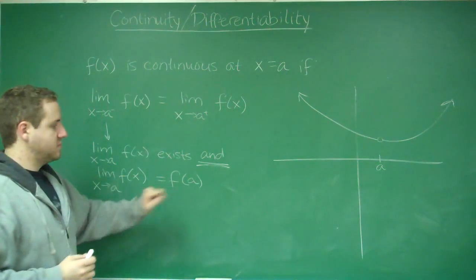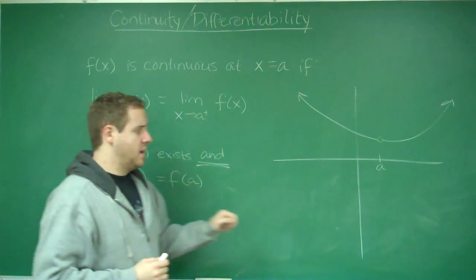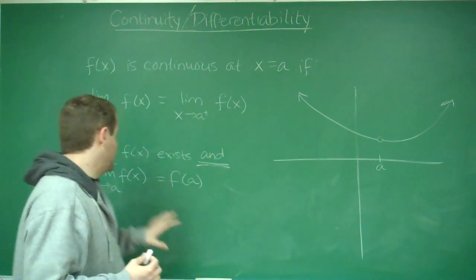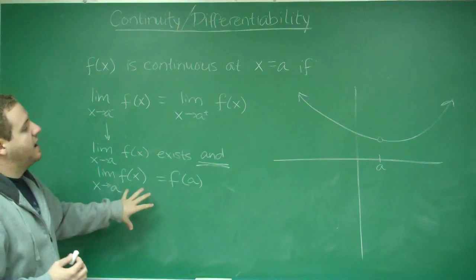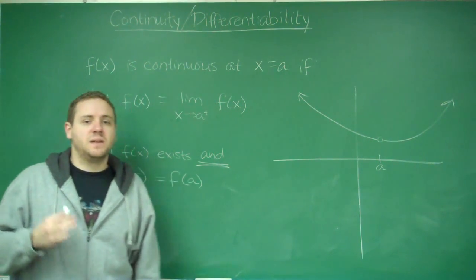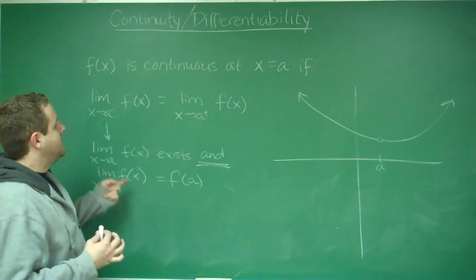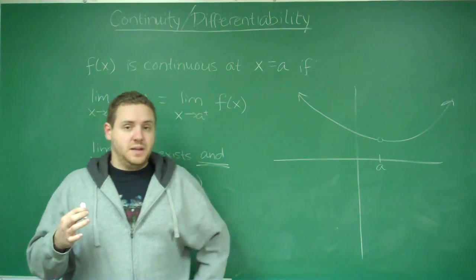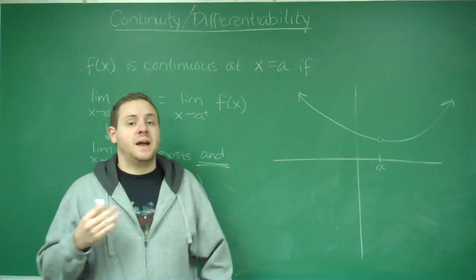But that limit does not equal f(a) because f(a) here does not exist. So this condition is not satisfied for this type of function and that's why that's not continuous. You can see if your limits from the left and the right are different, you're automatically not continuous. And that's a jump or maybe an asymptote.